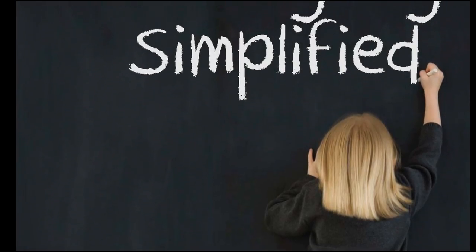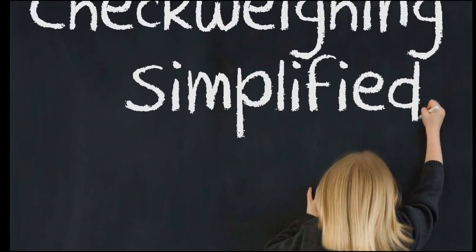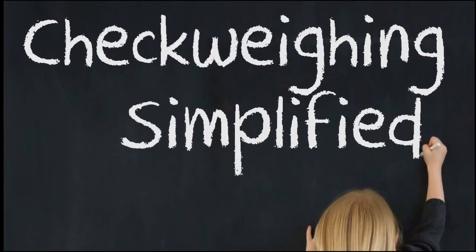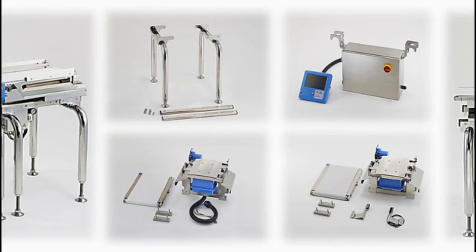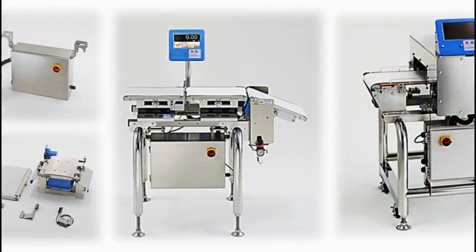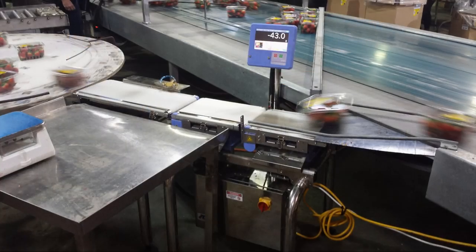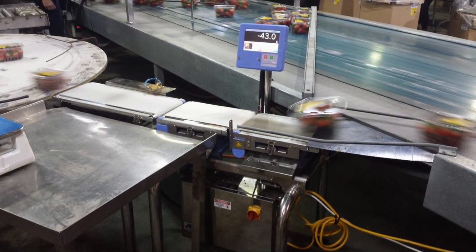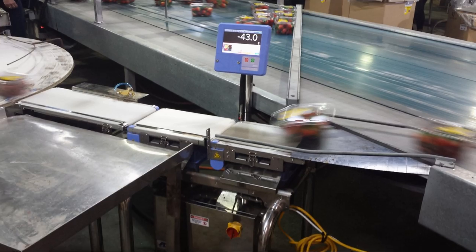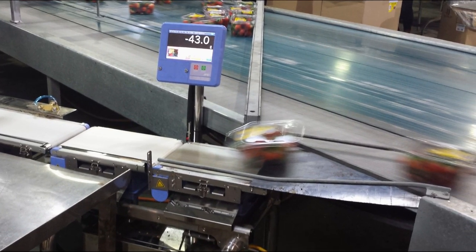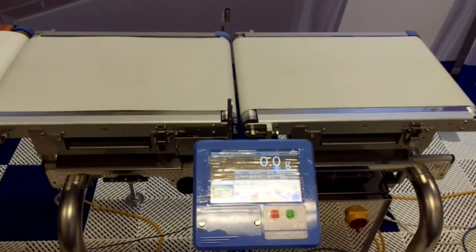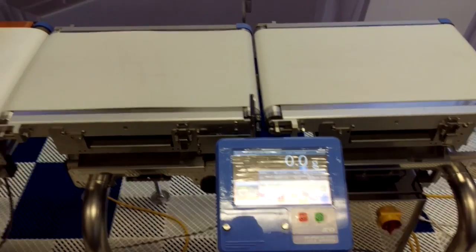This short video is just to show those clients that want to have some monitoring of the reject conveyor motor enabled on their checkweigher. A typical checkweigher from A&E, our popular model from Japan, basically consists of two conveyors.